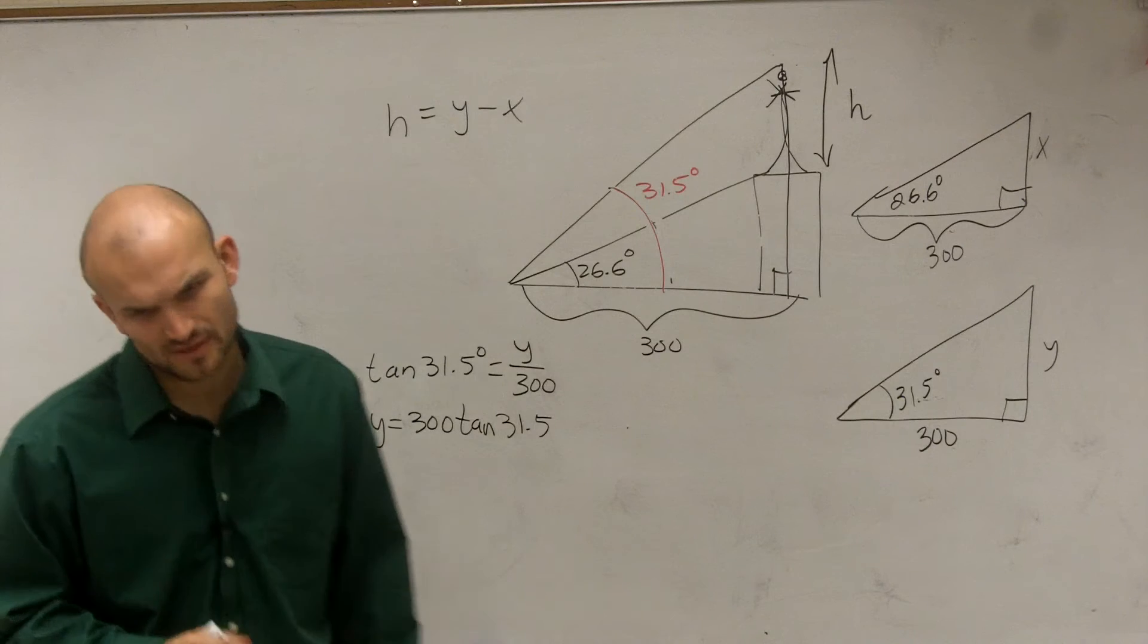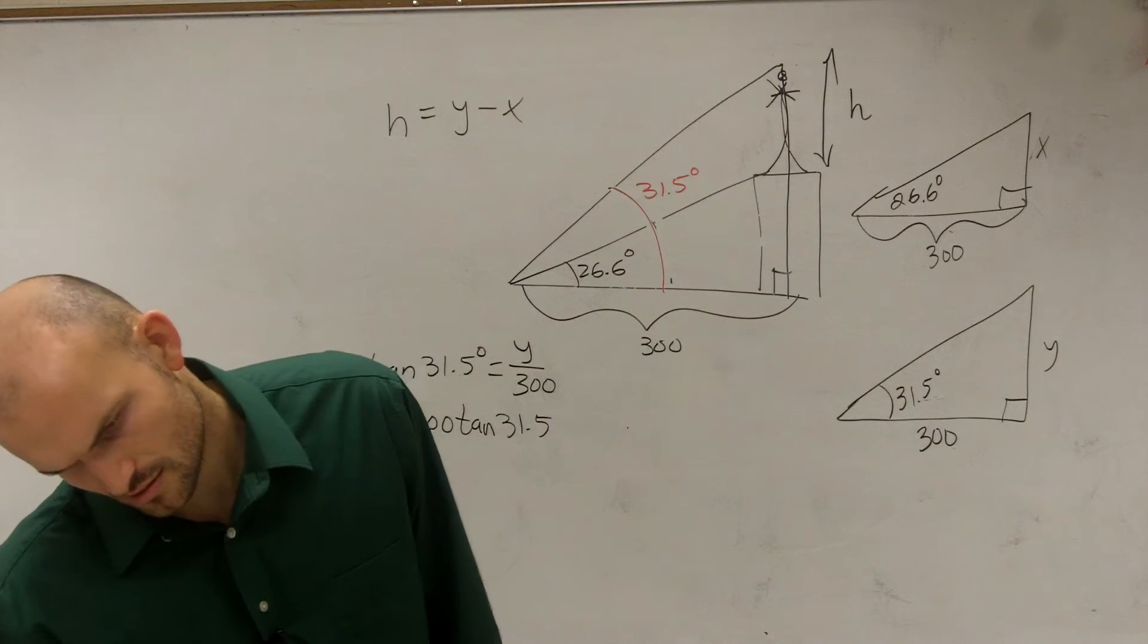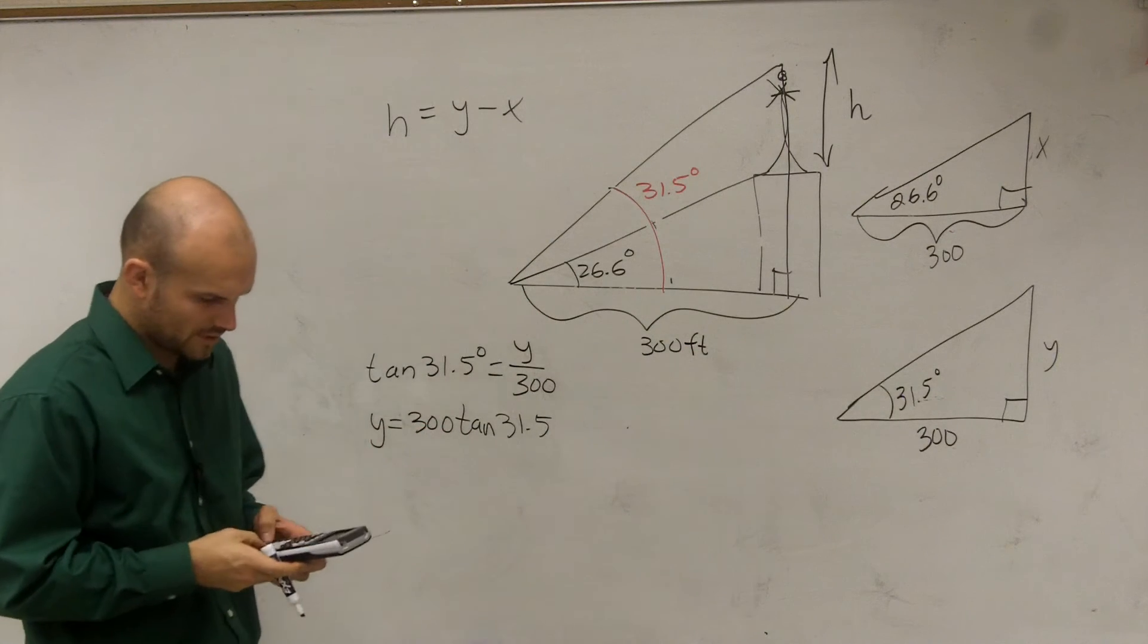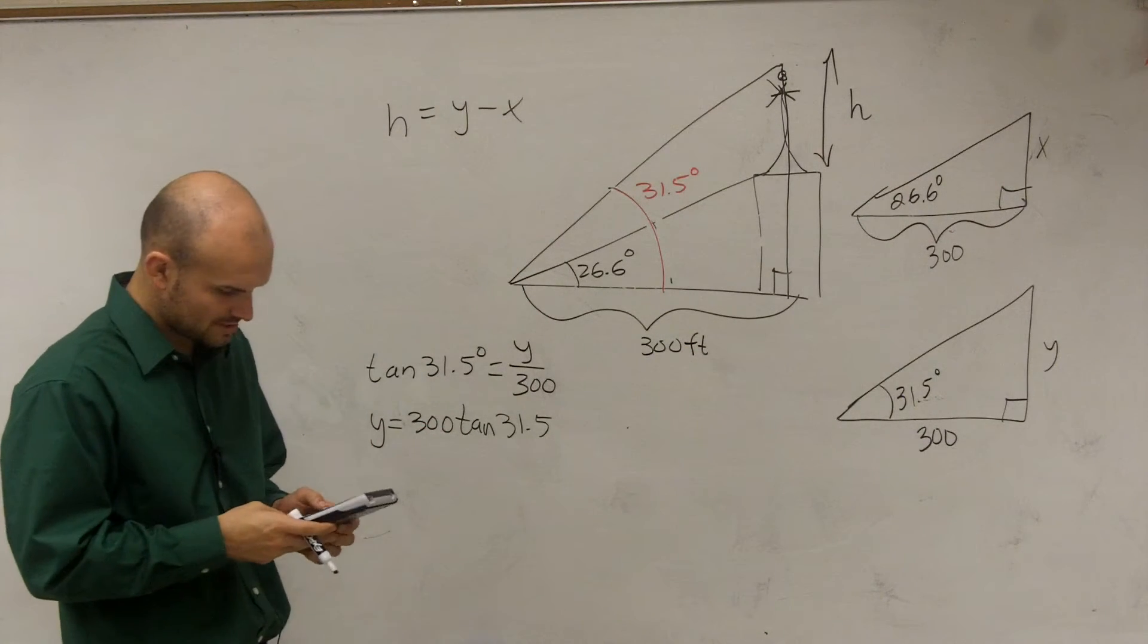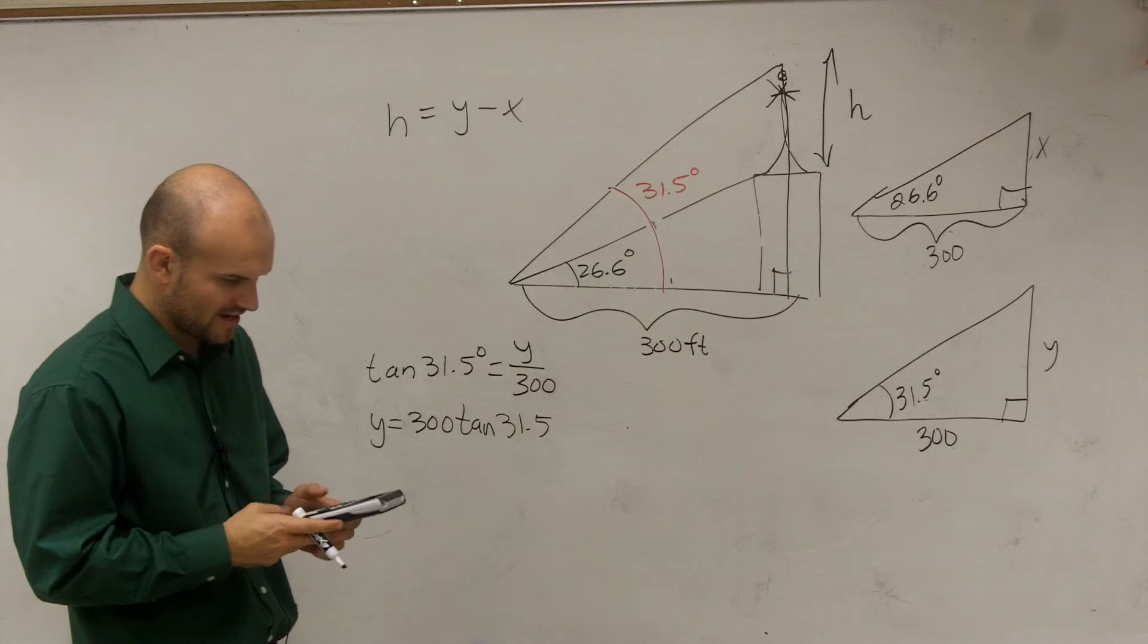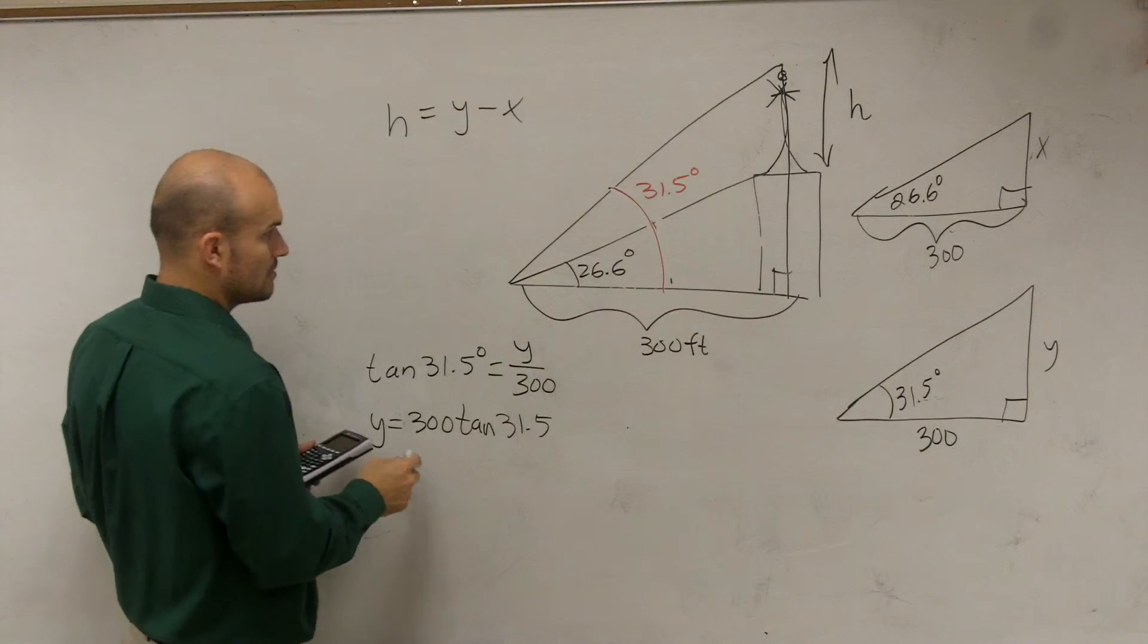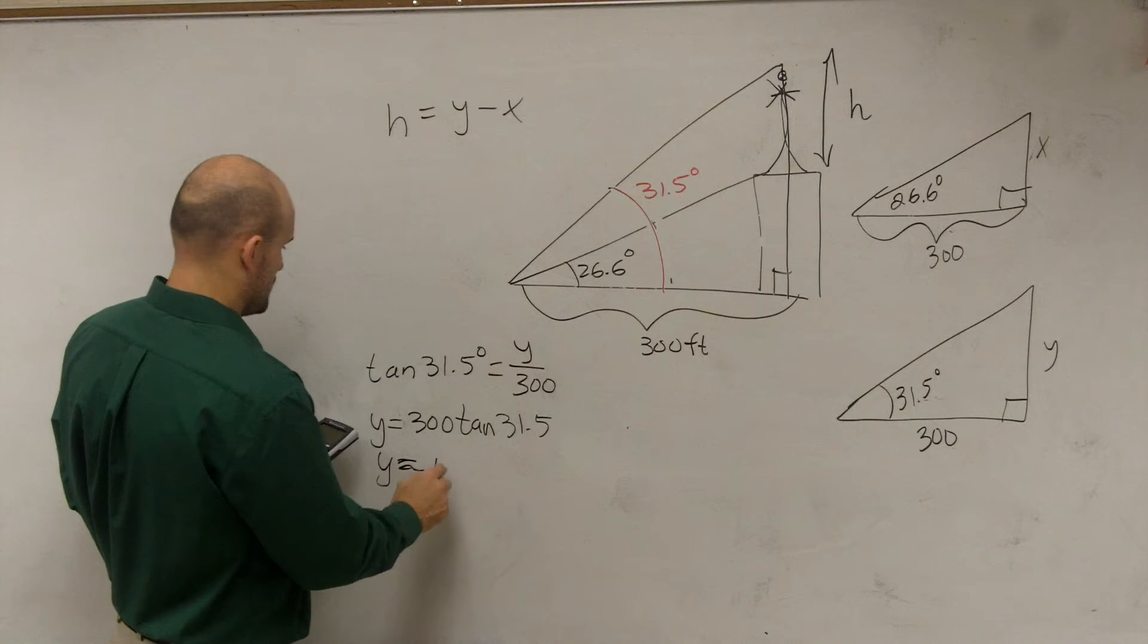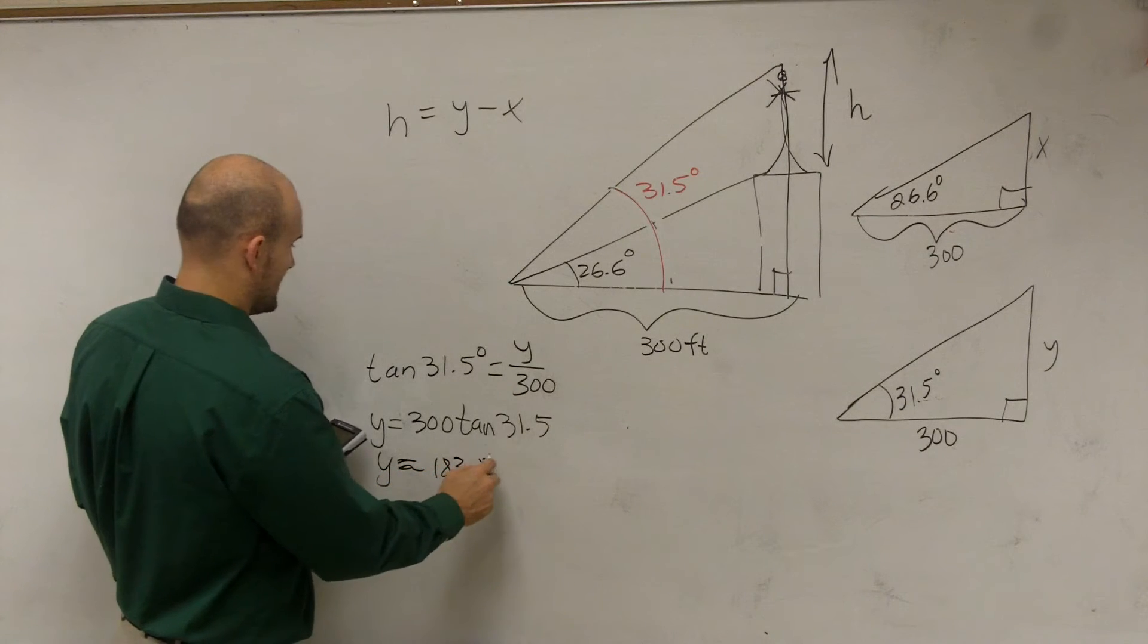Now was this in feet or not? It's in feet, okay. So therefore we do 300 times tangent of 31.5. So we get y equals approximately 183.84.